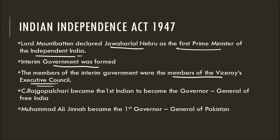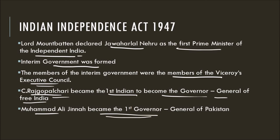Lord Mountbatten became the first Governor-General of the new Dominion of India and declared Jawaharlal Nehru as the first Prime Minister of independent India. After Lord Mountbatten, C. Rajagopalachari became the first Indian to become the Governor-General of Free India. On the other hand, Muhammad Ali Jinnah became the first Governor-General of Pakistan.